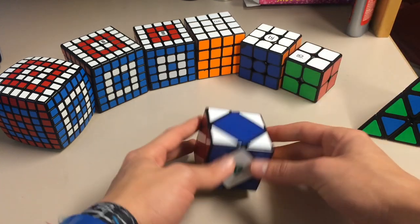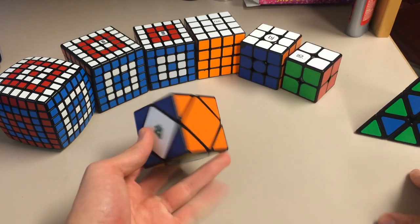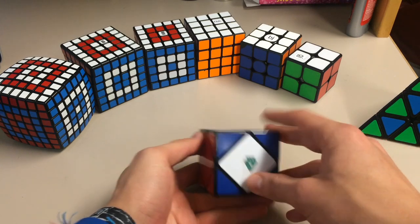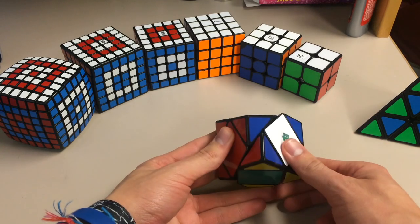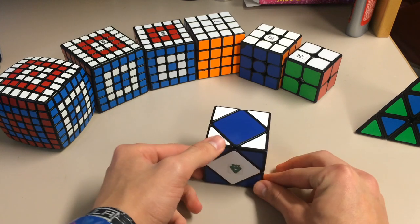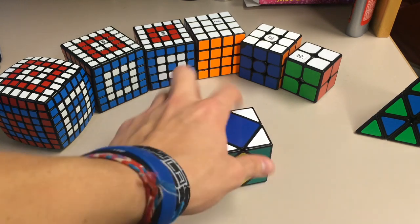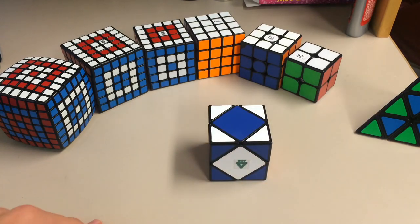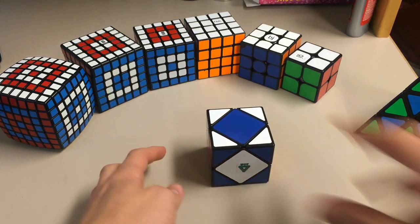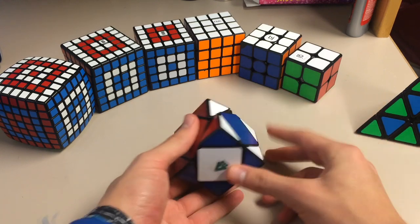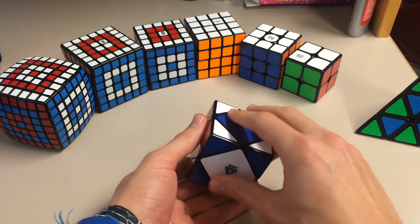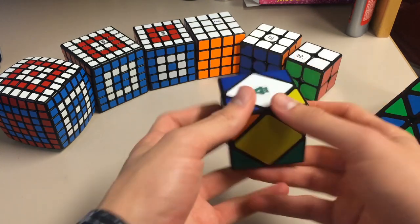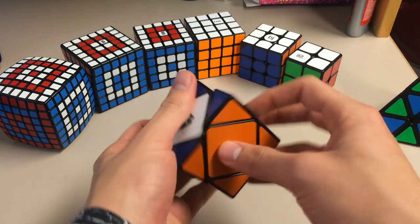For Square-1, it is a Shang Shao Square-1 with Lan Lan springs that have been cut in half, I believe. And Alex Devani, the nub, did that for me. And it turns really nicely. The Shang Shao springs were terrible that were originally in this, and made it really locky, or not locky. Everything clicked into place, but it was like too tight, and it was hard to turn. This feels really nice, and I love it.